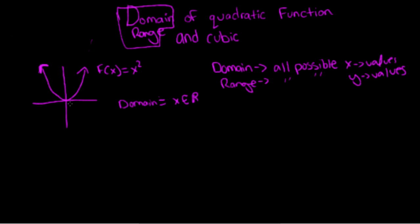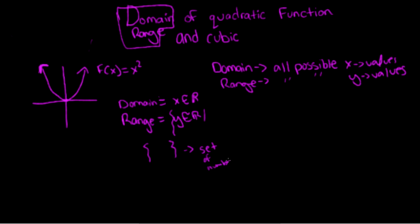So what is the range? The range is all possible y values. The y values cannot be negative, because the minimum y value is zero, and it just continues on and on to infinity. So the range is: y is all real numbers, such that y is greater than or equal to zero, because we see y can be equal to or greater than zero.